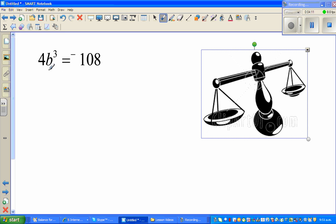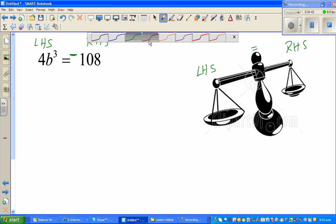Okay, now this is 4b cube is equal to negative 108. As I explained before, any equation can be treated as a balance. So you've got this is your left hand side, and this is your right hand side. In a balance, this is your left hand side and this is your right hand side. And this is the equal to sign. So whatever you do on one side, you will have to do on the other side.